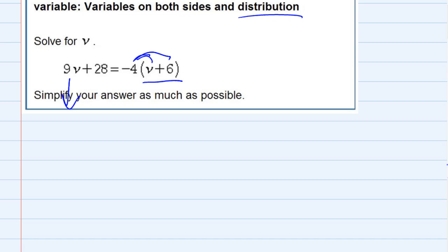So on the left hand side I'm just gonna bring everything down. 9v plus 28 equals, distributing the negative 4, negative 4 times v is negative 4v, and negative 4 times 6 is negative 24.